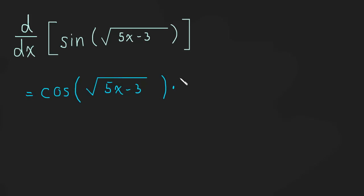And now that is where things get a little bit interesting. The inside is the square root of five x minus three. Well, this needs its own chain rule.